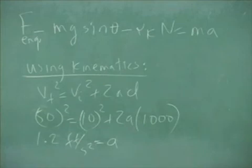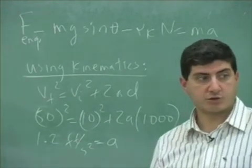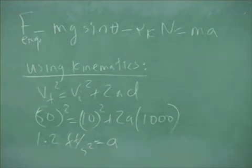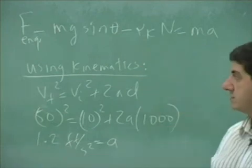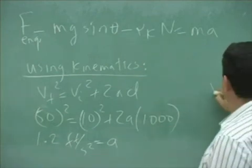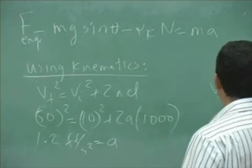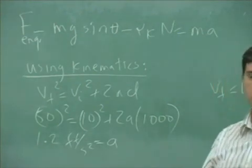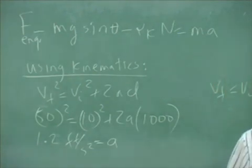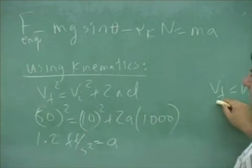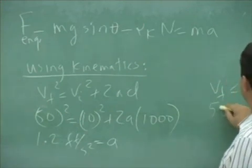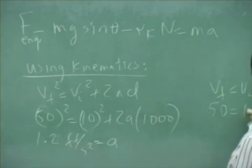Or I could use the V final equals V initial plus at, since I've already given you the t, and I've given you, that one would be maybe even easier, right? 50, 10, plus a, 8.